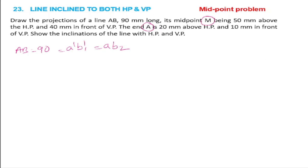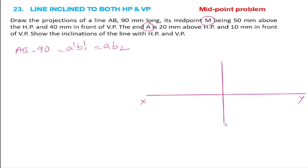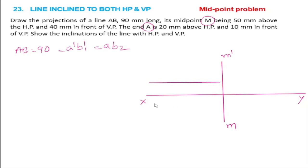We will solve this problem. First, draw the XY reference line. The midpoint M is 50mm above HP and 40mm in front of VP, so we place M dash and M points. End A is 20mm above HP and 10mm in front of VP — so this distance from the XY reference line is 20mm, and this distance is 10mm.